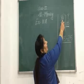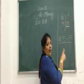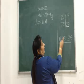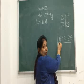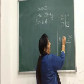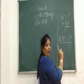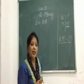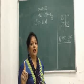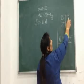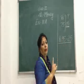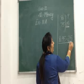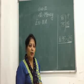दो तरह से write कर सकते हैं. अगर हमने rupees और पैसा ऊपर write किया हैं, तो हम point put नहीं करेंगे. अगर हमने point put करना हैं, तो rupees को beginning में write करेंगे — for example 95 rupees 25 paisa. जब point आ जाता है, तो P नहीं write करना. जब P है, तो point नहीं. यह point अपने आप show करेगा कि पैसा है.